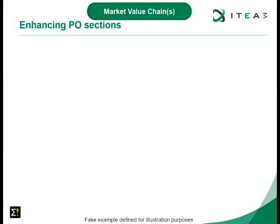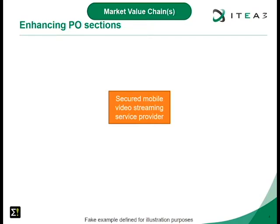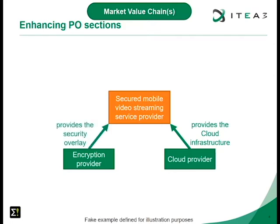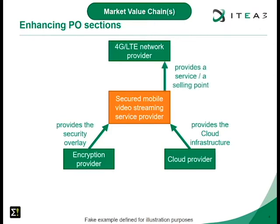For enhancing the PO sections we're going back to the example we already used for the PO, which focuses on the market value chain. Imagine you want to prepare a project dealing with a secure mobile video streaming service provider. In this market value chain you will touch upon several markets: a cloud provider supplying the cloud infrastructure, an encryption provider giving you a security overlay, and a 4G or LTE network provider which is both a selling point and provides network bandwidth.